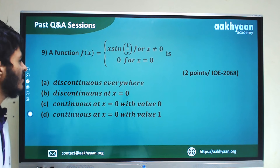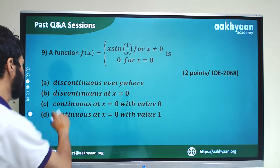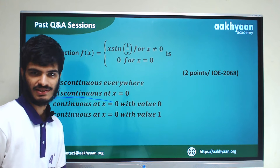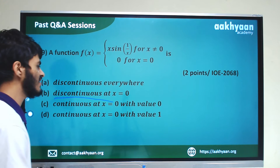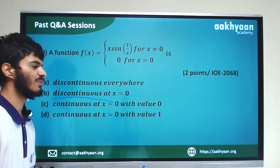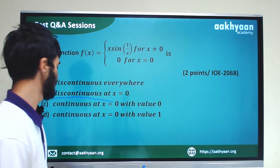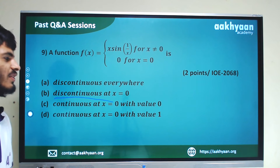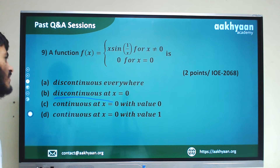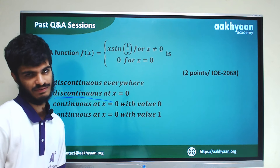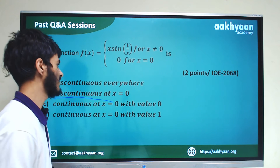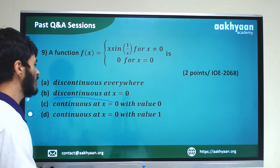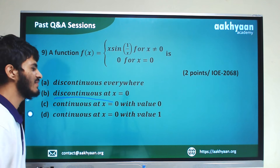The options are: discontinuous everywhere, discontinuous at x equal to 0, continuous at x equal to 0 with value 0, or continuous at x equal to 0 with value 1. We will check continuity at the point x equal to 0.